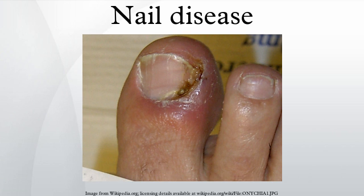Onychomycosis, also known as tinea unguium, is a contagious infection of the nail caused by the same fungal organisms which cause ringworm of the skin. It can result in discoloration, thickening, chalkiness, or crumbling of the nails, and is often treated by powerful oral medications which, rarely, can cause severe side effects including liver failure. Mild onychomycosis sometimes responds to a combination of topical antifungal medication, sometimes applied as special medicinal nail lacquer, and periodic filing of the nail surface.